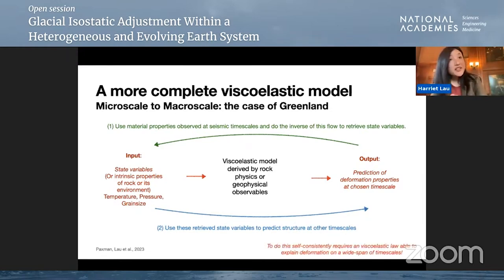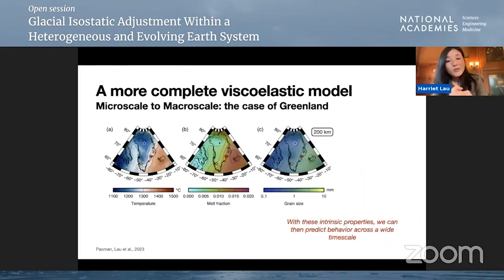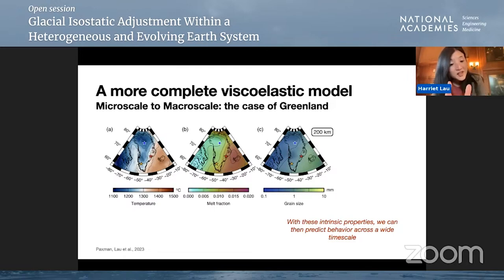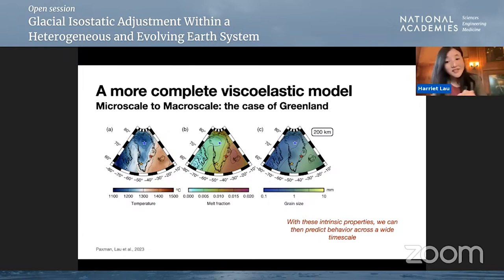To do this consistently — which is the goal rock physicists are working toward — we aim for a viscoelastic law able to explain deformation on the full spectrum of geophysical processes. One output of the Bayesian inversion is the temperature map at about 200 kilometres depth: much of Greenland sits above an anomalously cold mantle, while moving toward Iceland you can see the influence of the Iceland plume heating the ambient mantle. This pattern is reflected in our estimates of melt fraction and grain size, though all of these have uncertainties.